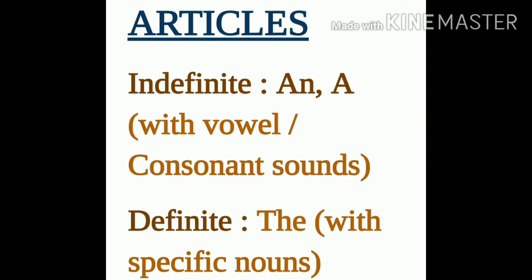Hum ek dog ki baat kar rahe hain, general baat kar rahe hain — jitne bhi dogs hain, sab pet hote hain. For example, 'Dogs are faithful' — yeh general baat ho rahi hai, kisi specific dog ki baat nahin ho rahi, so here we use the indefinite article. Note: A is used before words that begin with consonant sounds, while An is used before words beginning with vowel sounds.